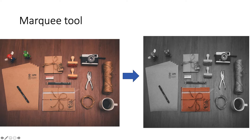I want to pop it up, so the effect I want to achieve is shown on the right — I just want to increase the brightness and contrast of just the folder, but the rest of the image I want to turn into black and white. This can be achieved with the help of a marquee tool in Photoshop.